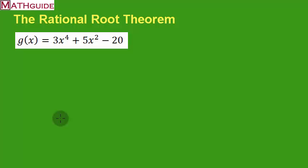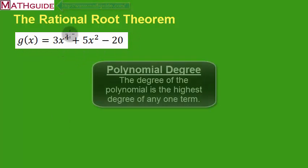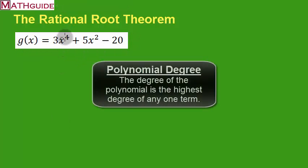This is MathGuide.com. My name is Mark Karadimos. Today we're going to take a look at the Rational Root Theorem. So the Rational Root Theorem. Now here you can see that I have a polynomial. This polynomial is fourth degree, and its name is g of x.